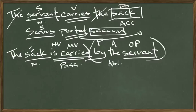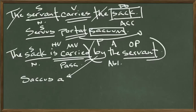Now for the passive. The sacum, which was in the accusative case, becomes the nominative — so sacus. We'll go with Latin word order: 'by the servant' uses a (since a consonant follows) — sacus a servo. 'A' is the word for 'by' in Latin; if a vowel follows next we'd use 'ab.' And then the same verb: portat.